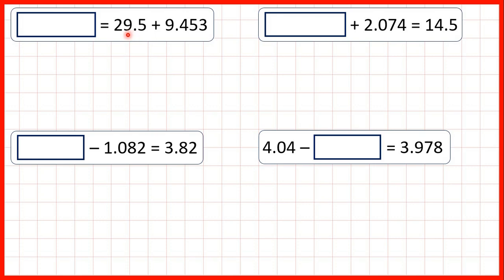We just need to add 29.5 and 9.453, but because we're adding decimals, we need to remember that we don't line the digits up on the right-hand side. Instead, what we do is line up the decimal points, because if the decimal points are lined up, then the place values in our question, so our tens, ones, tenths, hundredths, and thousandths will be lined up as well.